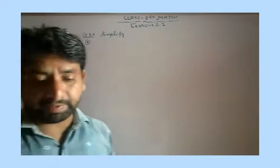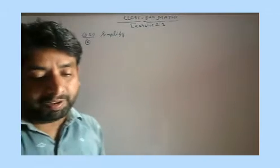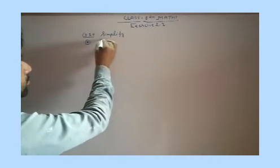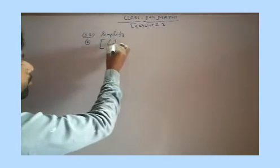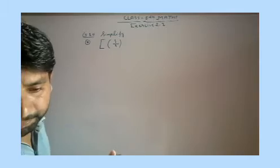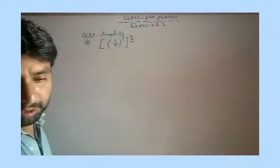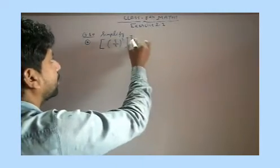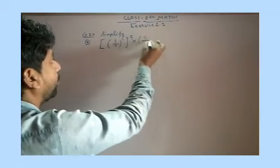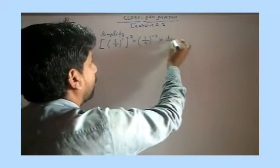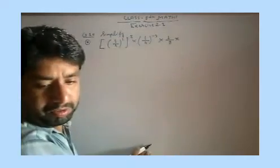This question is 10. Simplify. We have 3 upon 4, raised to the power 3 and whole raised to the power 2, into 1 upon 4 raised to the power minus 3, into 1 upon 8 raised to the power 3.